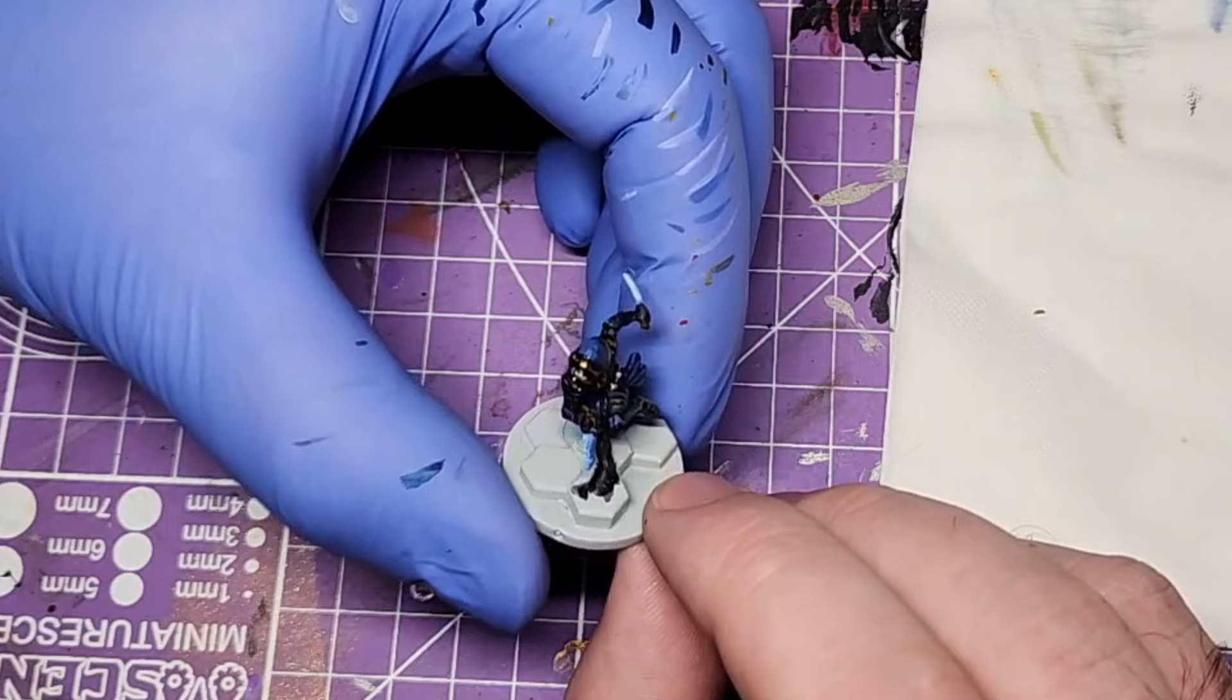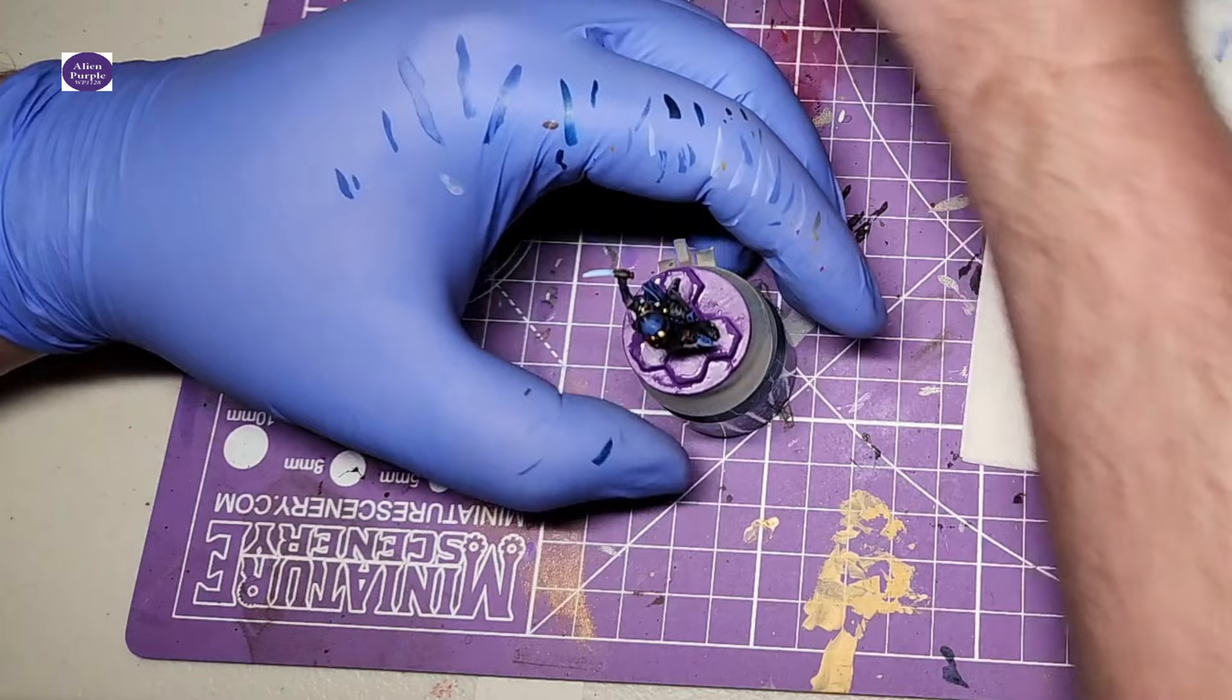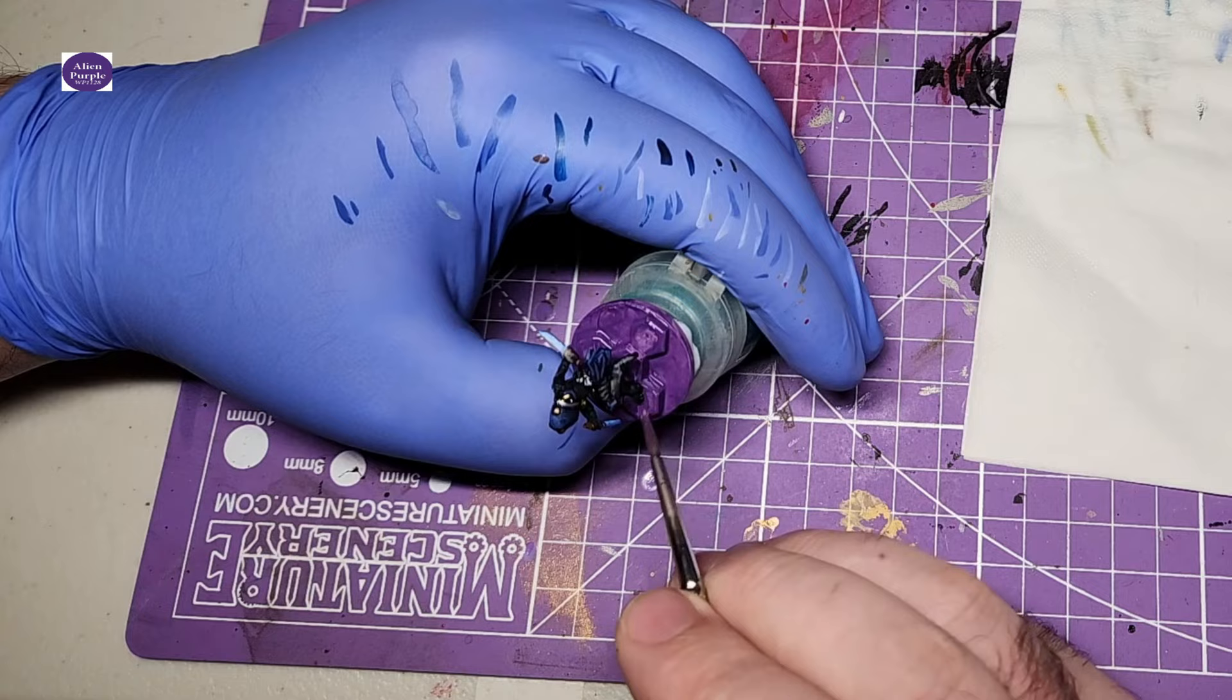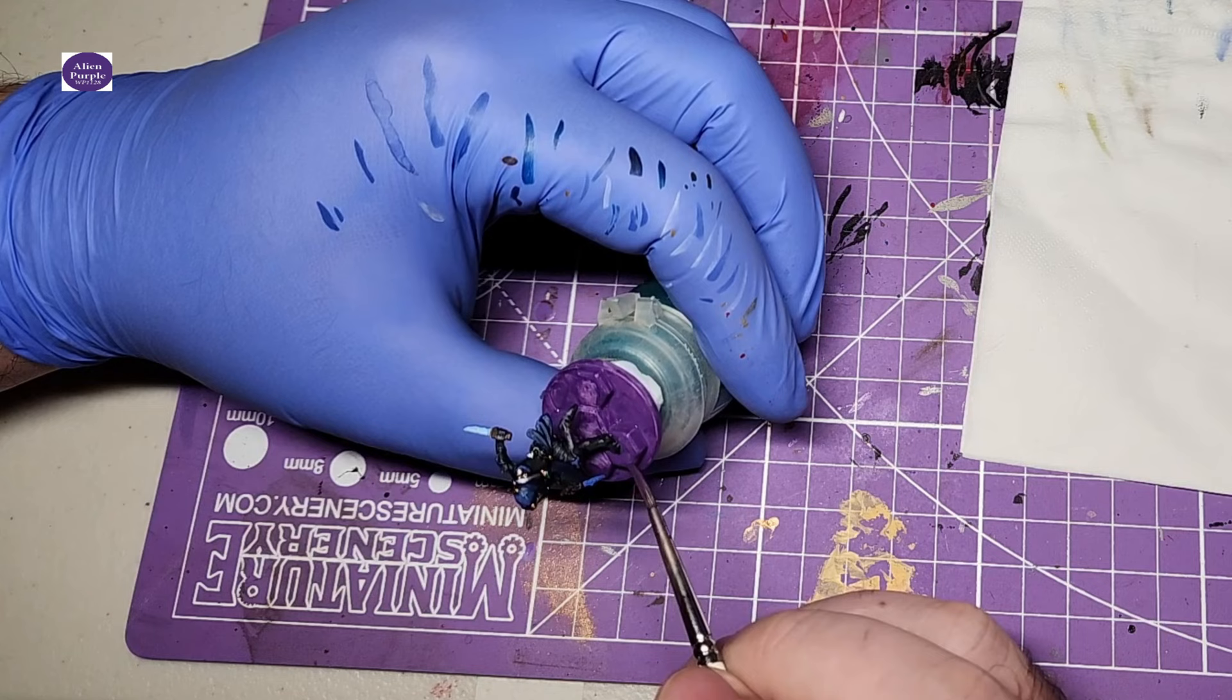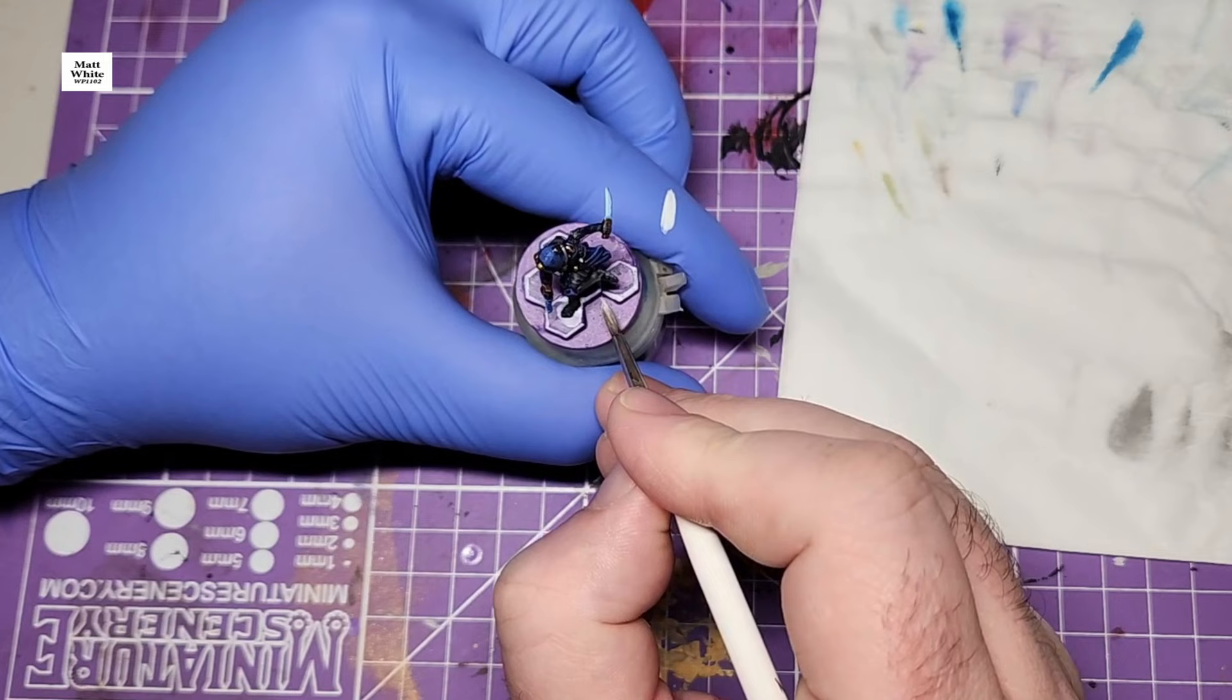And he looks pretty good, but now it's time to do the base. I had some issues with the base. I knew the sort of effect I was looking for but I wasn't entirely sure how I was going to achieve it, so it was time to mess around. I started by blocking it all in with Alien Purple.